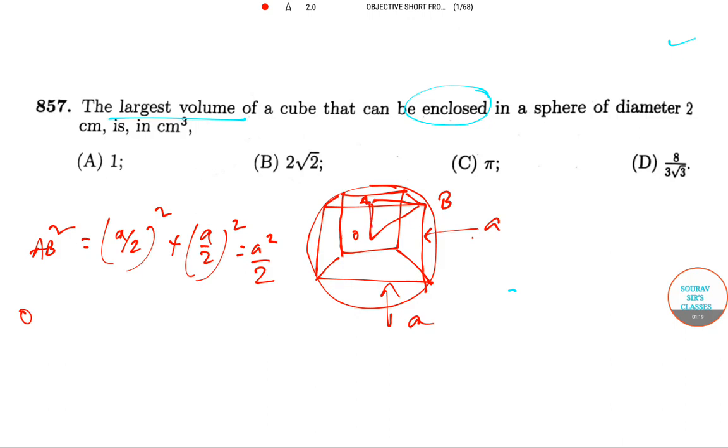Now OA square this part, OA square is nothing but A by 2 square which is A square by 4 and OB, you know this is a half of 2, this diameter is already, so it is a radius part, so this is 1.